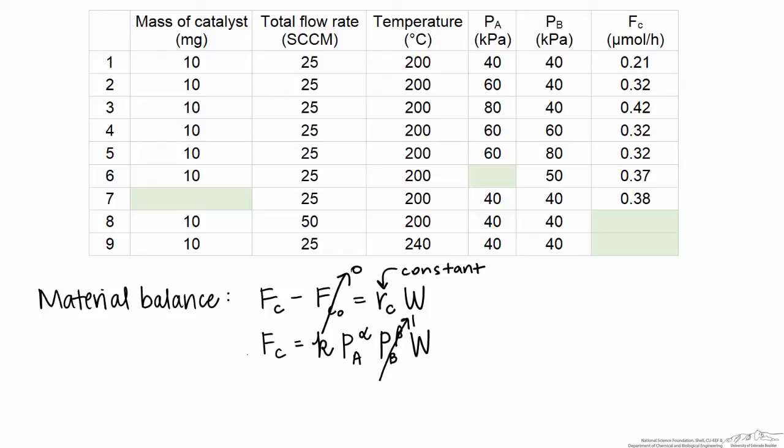As for the partial pressure of A, we see that at constant partial pressure of B, as we double the partial pressure of A from 40 to 80, the rate goes up also by a factor of 2. When it goes up from 40 to 60, it goes up by a factor of about 1.5. Therefore, we expect that alpha is approximately equal to 1. This is now our material balance where we've figured out the values of alpha and beta. The flow rate of the product out equals a rate constant times the partial pressure of A times catalyst mass.